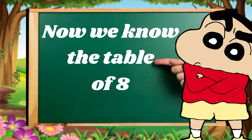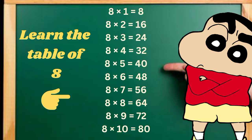Eight, six's sixty-two. Eight, ten's forty-three. Eight, seven's forty-eight. Eight, eight's sixty-four. Eight, nine's seventy-four. Now we know the table of eight.